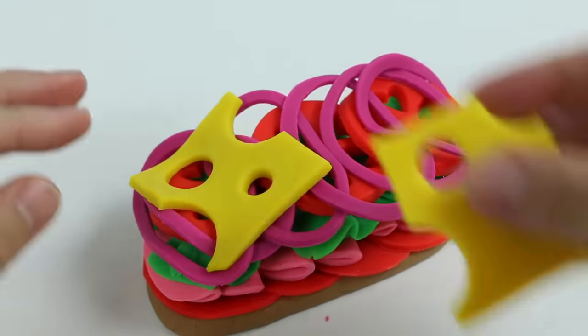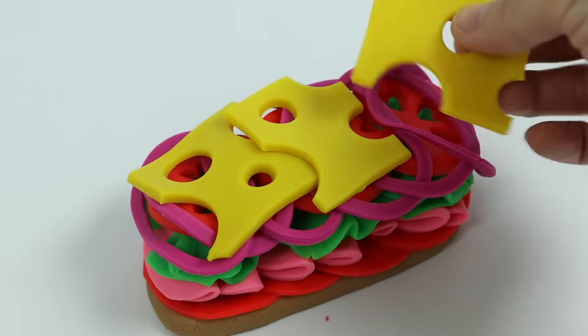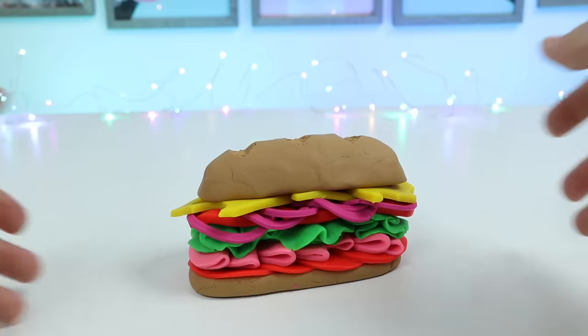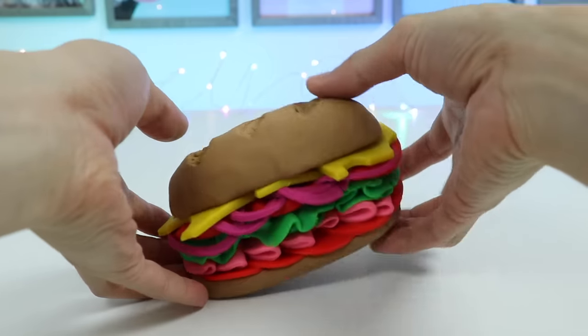Now let's add the onions. Now let's add the cheese. Put the bread on top. Perfect, here's a closer look at our Play-Doh sandwich.